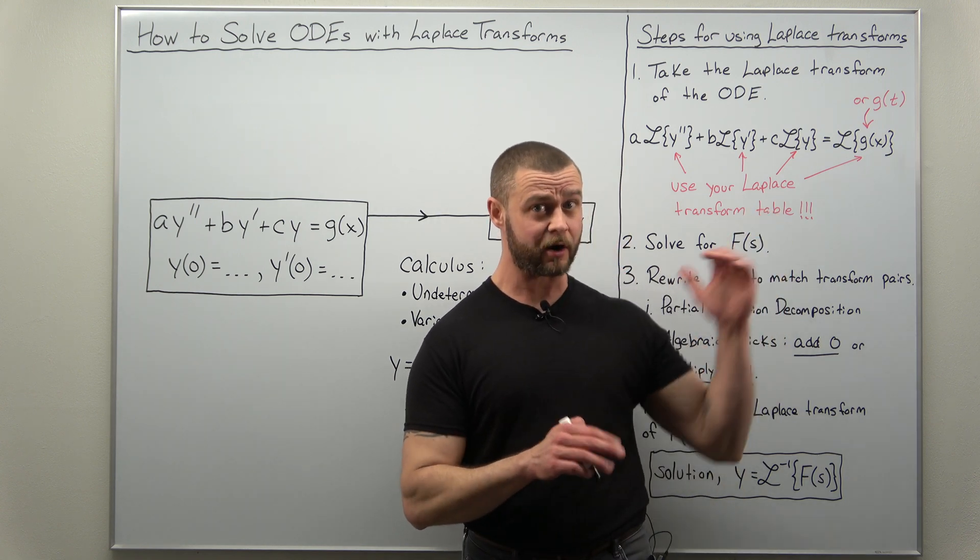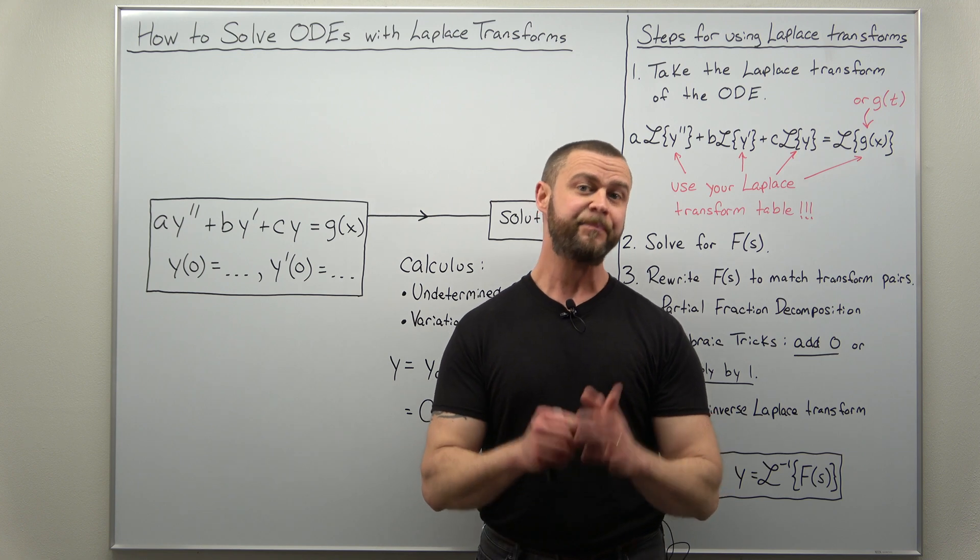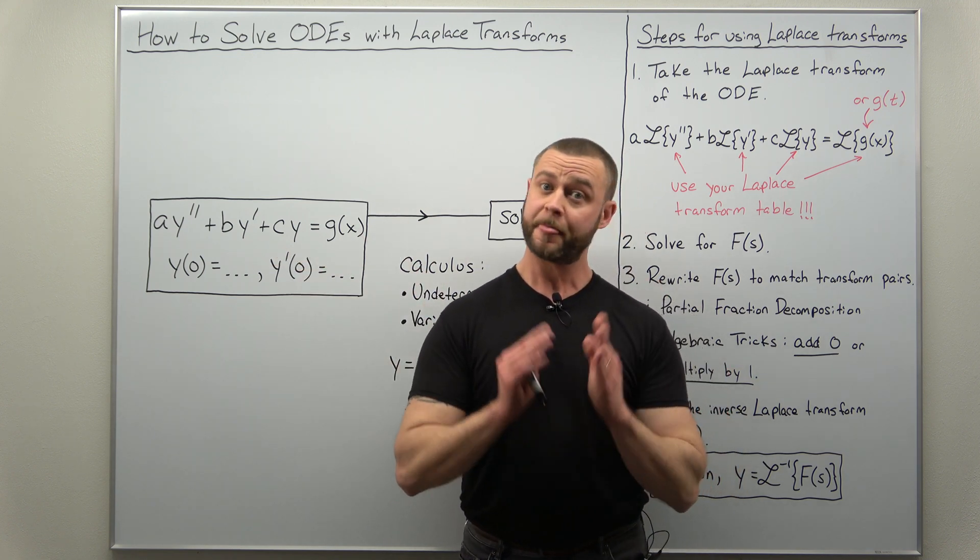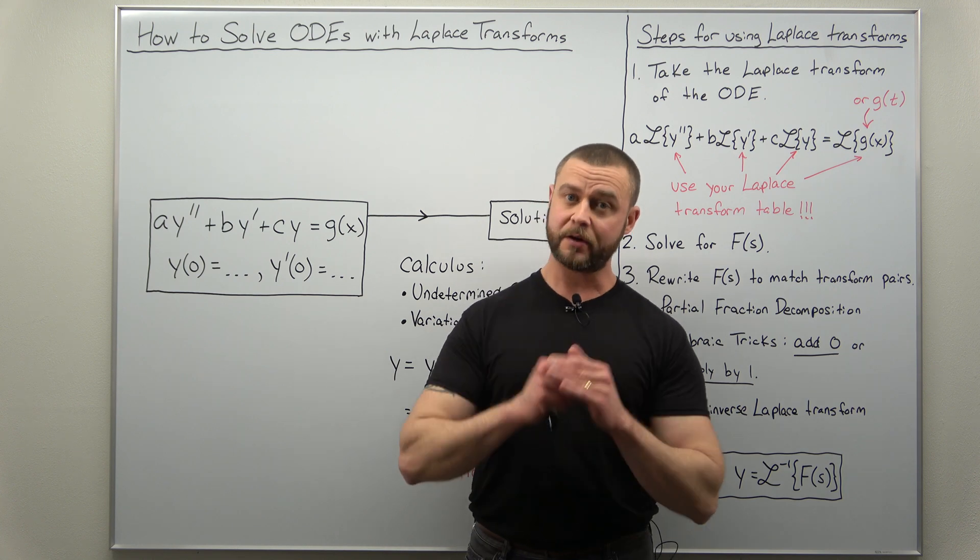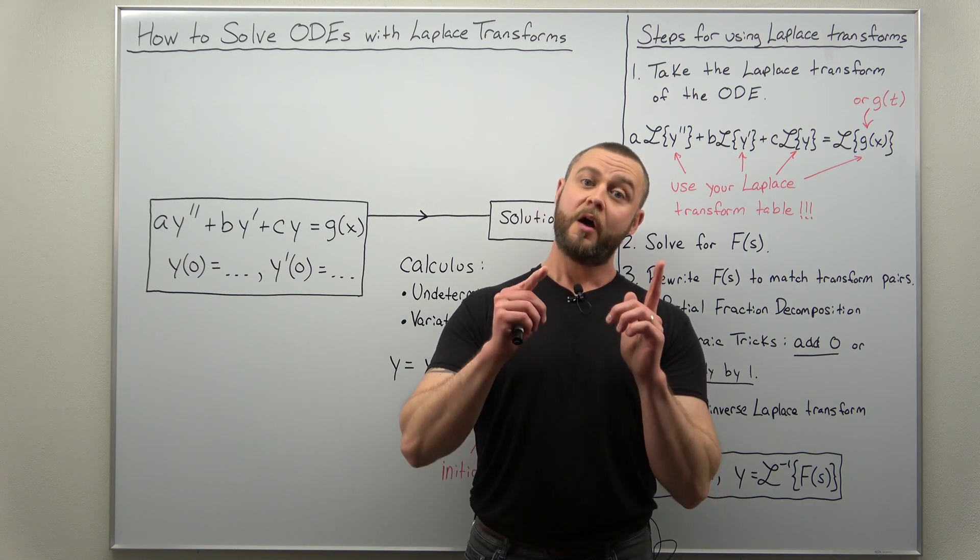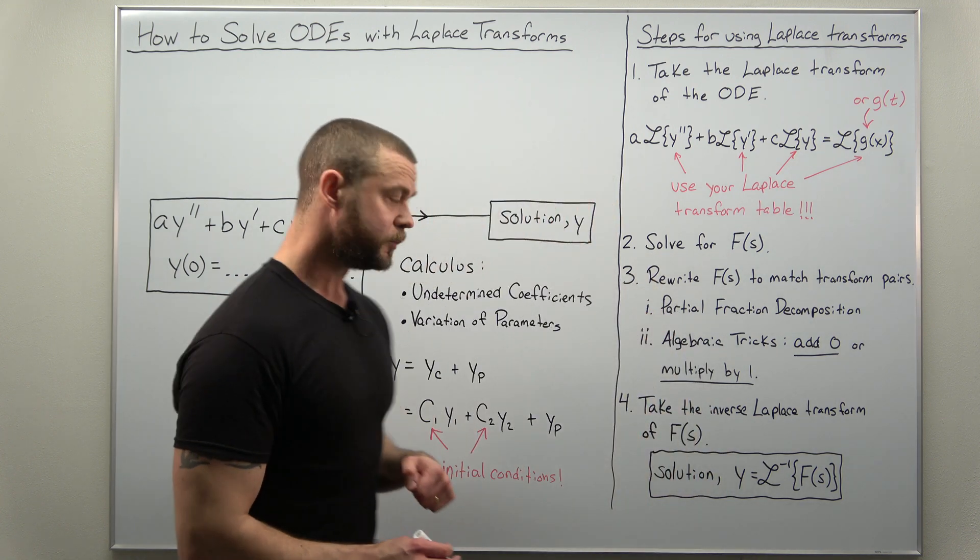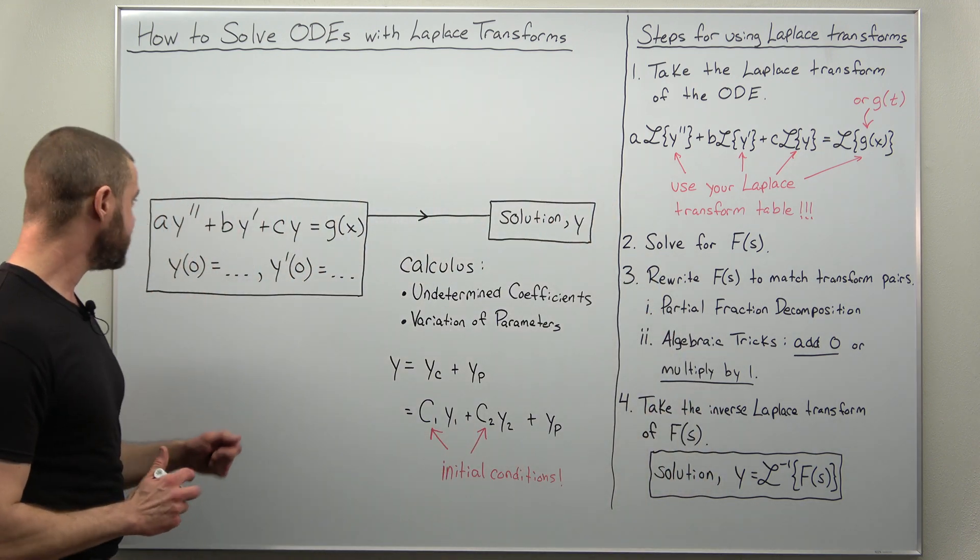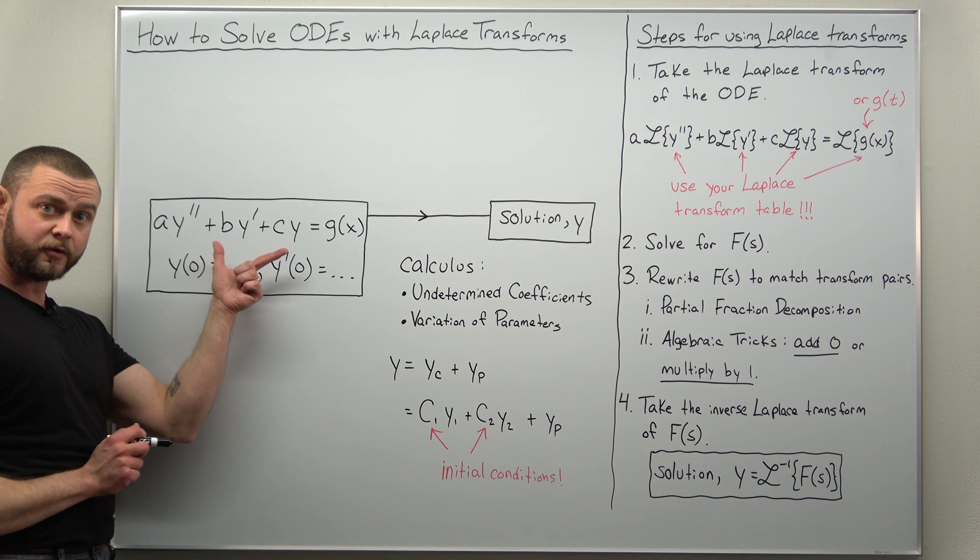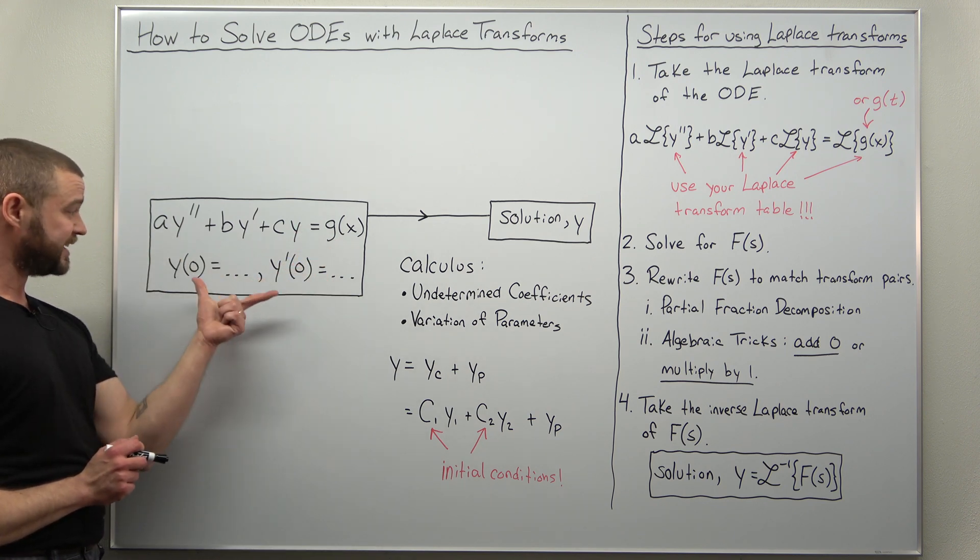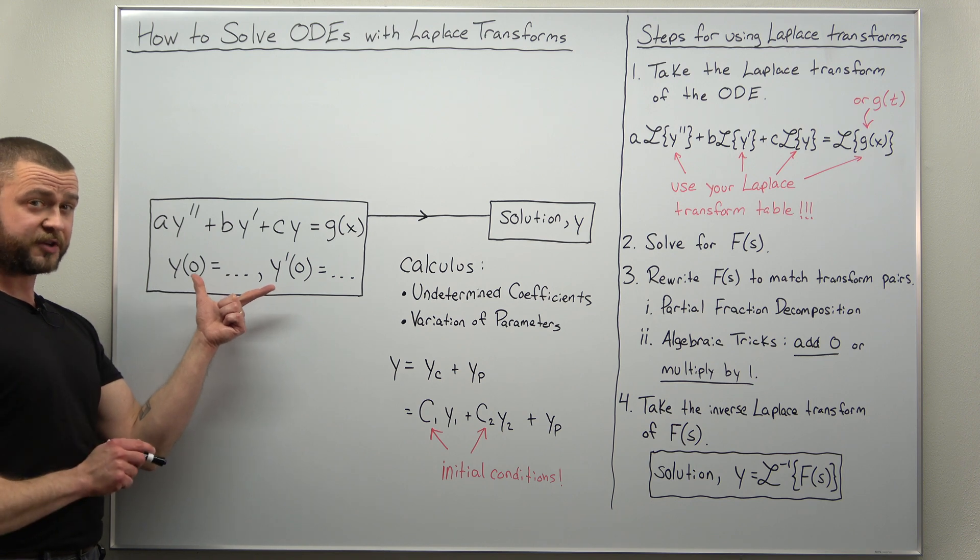Now we have the steps on the side here which we'll go through momentarily, but before we do that let's go back earlier in your course when you were solving second-order differential equations with constant coefficients that were non-homogeneous. Let's consider our problem here, this second-order ODE. It has constant coefficients, it's non-homogeneous, and there's initial conditions.